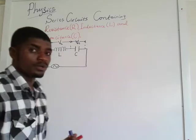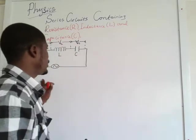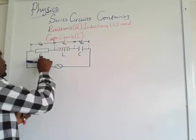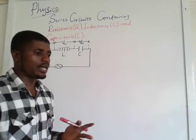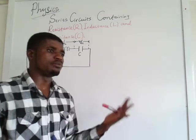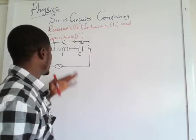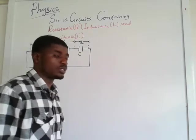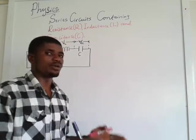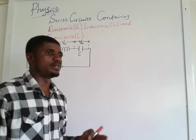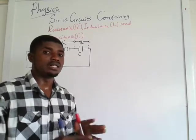If you recall in our previous lesson, we said that in a circuit containing only a resistor, the voltage and the current vibrate and are in the same phase — meaning they attain their maximum, minimum, and zero values at the same time, or rather they vibrate with the same frequency. We also said that a circuit containing only an inductor L makes the current and the voltage vibrate out of phase, meaning they reach their maximum, zero, and minimum values at different time intervals.